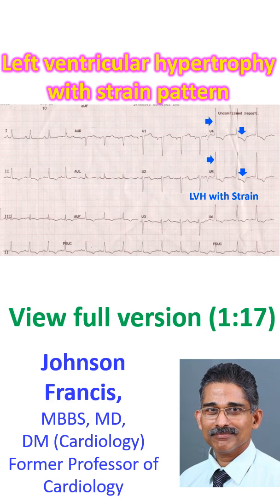LVH with strain pattern usually occurs in pressure overload of the left ventricle, as in systemic hypertension or aortic stenosis. A similar pattern may also occur in long-standing severe aortic regurgitation.